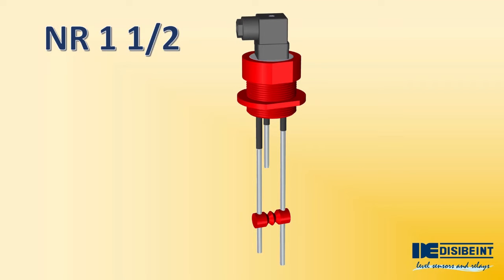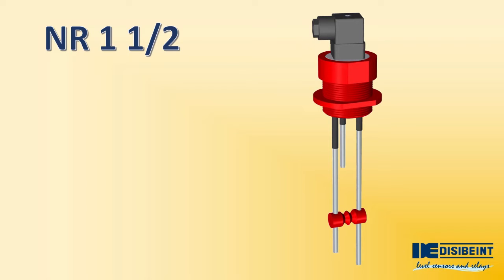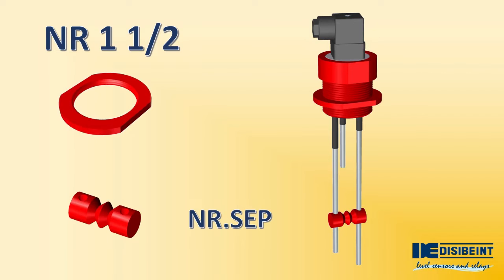The electrodes must not touch each other since they cause false signals in the automation work sequence. Especially in lengths greater than one meter, it is very convenient to keep the reference electrode and the minimum level electrode separated by means of the NR.SEP accessory, which keeps them at a distance from each other along their entire length. If the tank has a one and a half inch threaded inlet, the NR electrode holder is installed directly into this housing. Use reducer sleeves if the threads available in the tank are larger. If a simple hole is available, use the lock nut NR.TUE to fix the sensor securely.